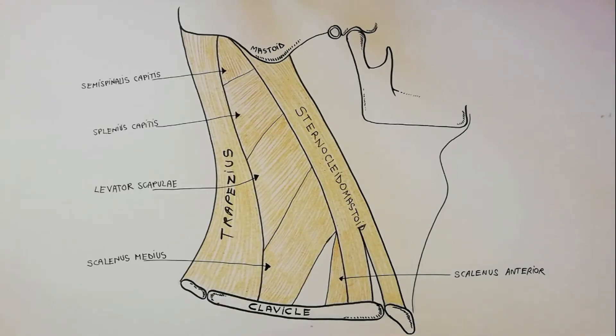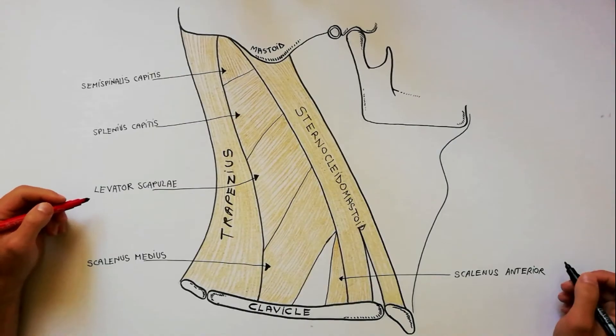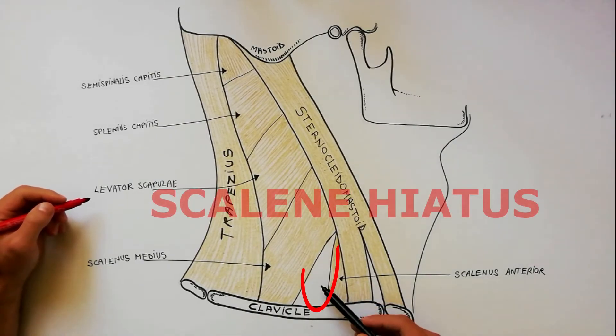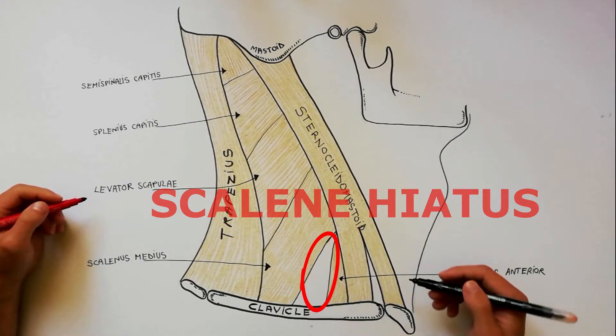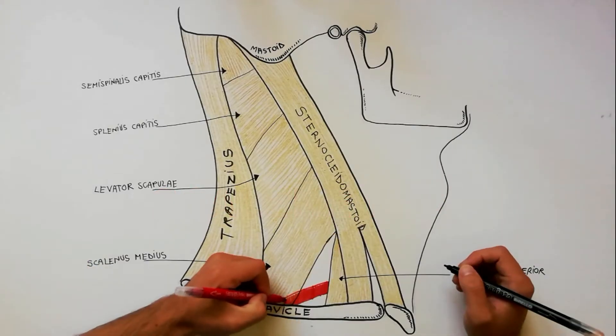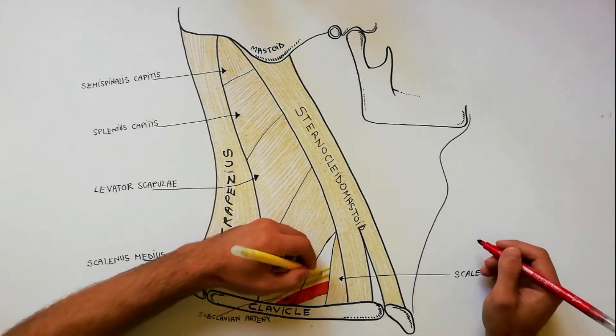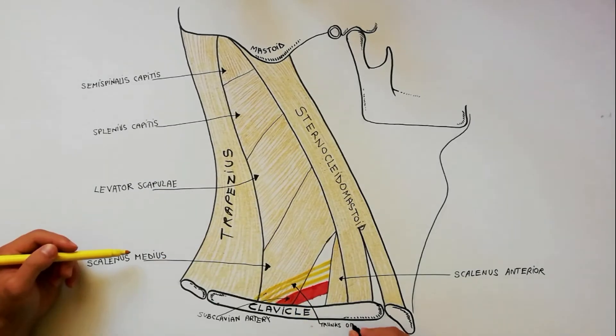Keep in mind that between scalinus anterior and scalinus medius is a space called the scalene hiatus. Through this hiatus passes the subclavian artery and trunks of brachial plexus.